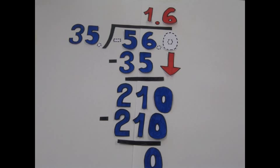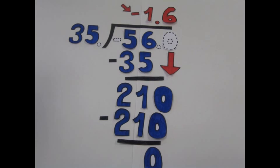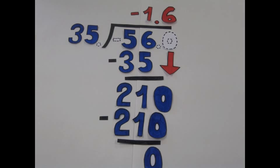The last thing you have to do is figure out whether the answer is positive or negative. Whenever you divide two rational numbers with different signs, the answer will come out negative. Therefore, the answer will be negative 1.6.